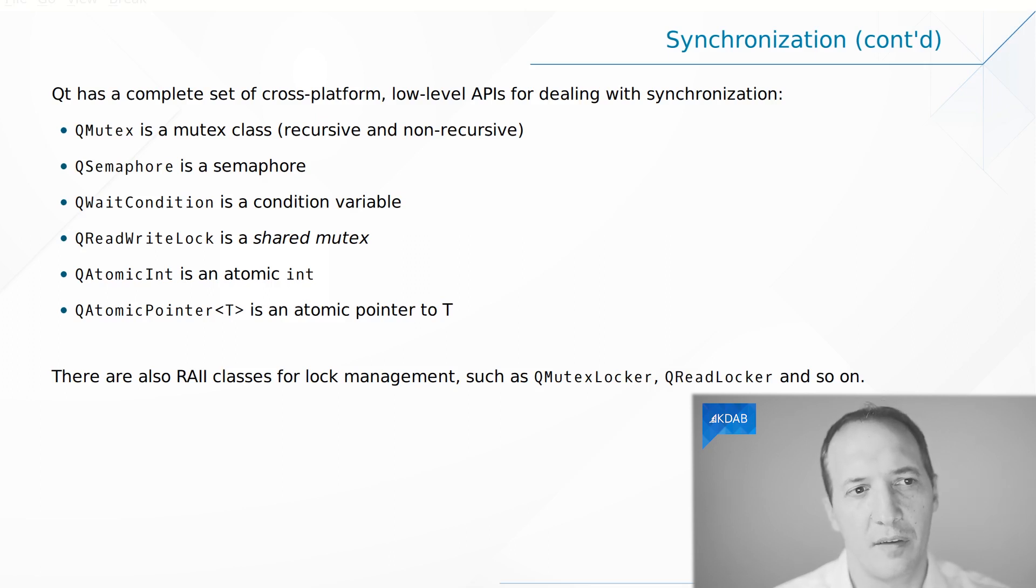We'll talk a bit more about mutexes, but for now let's have a look at the other synchronization primitives. Qt provides you with QSemaphore, which is a way to count objects either counting up or counting down. There are many uses for semaphores. Another one is the wait condition, which is also called a condition variable, which is a way for a thread to wait for a condition to be true, like now I have a task to do or the queue of tasks isn't empty.